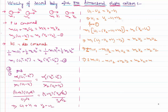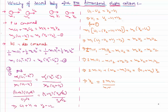Continuing the rearrangement: 2m1·u1 + (m2 − m1)u2 = (m1 + m2)v2. Getting (m1 + m2) to the denominator, I can find the velocity of the second body as v2 = (2m1·u1)/(m1 + m2) + ((m2 − m1)/(m1 + m2))·u2.